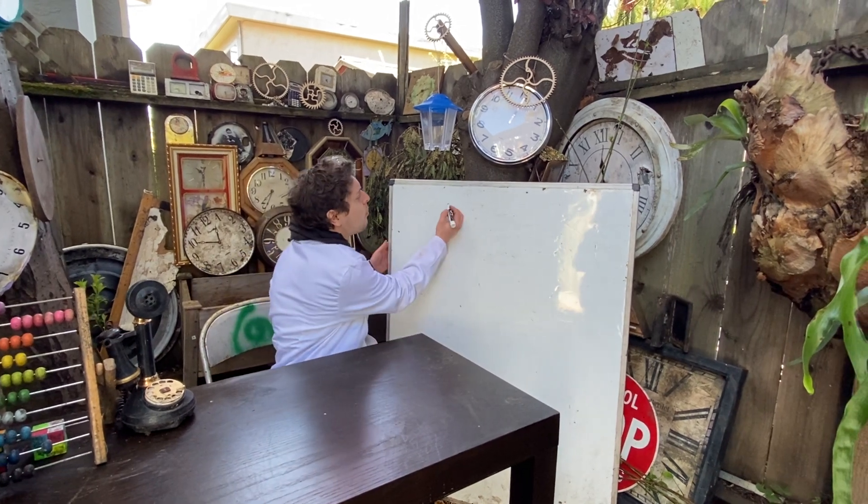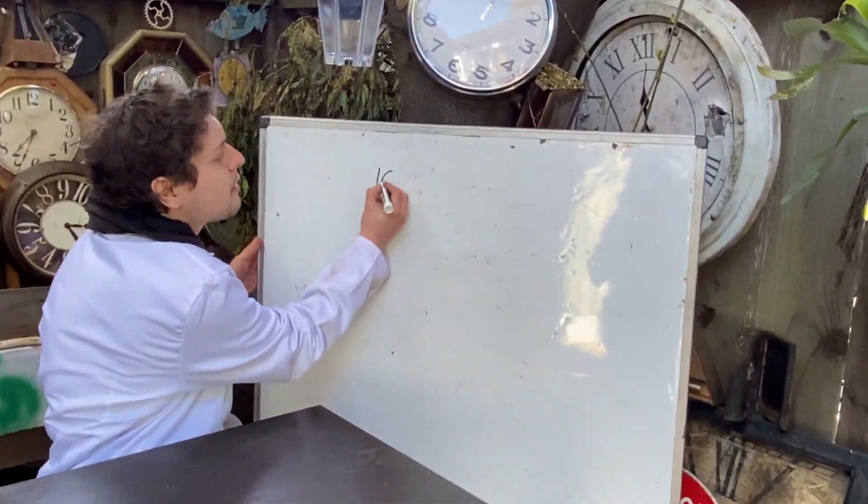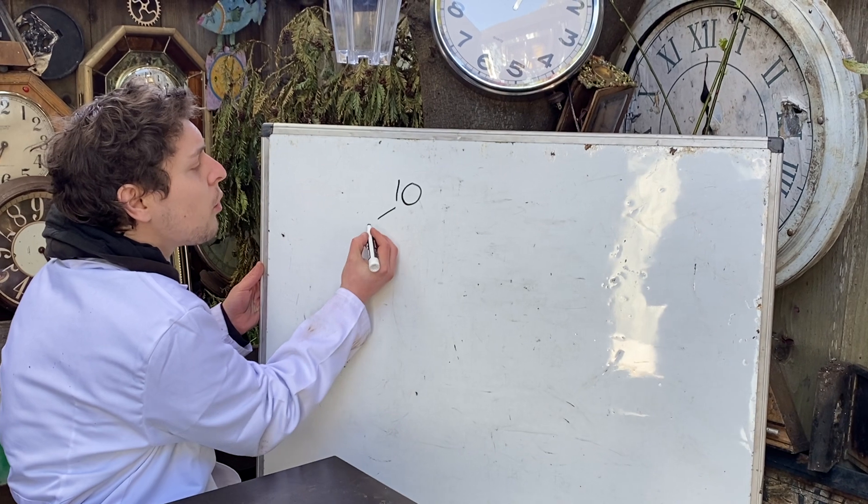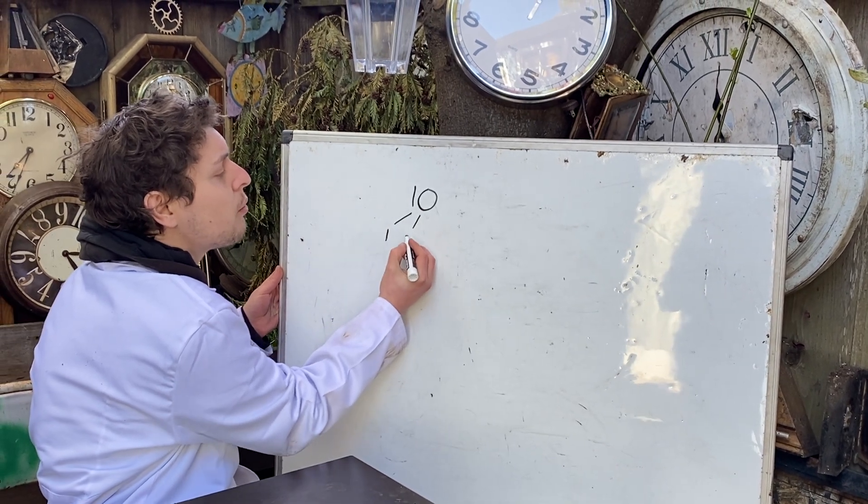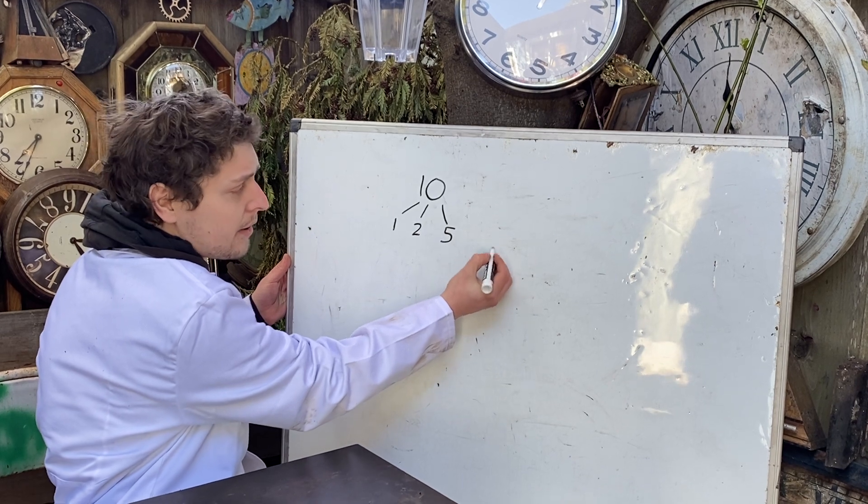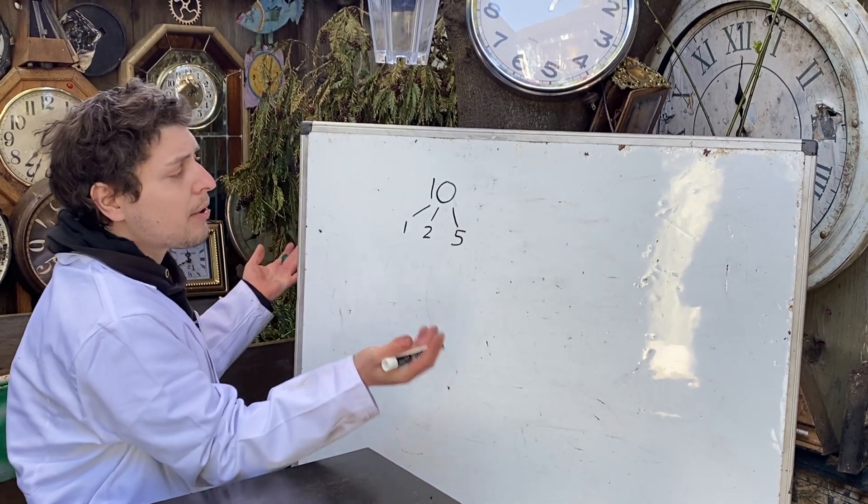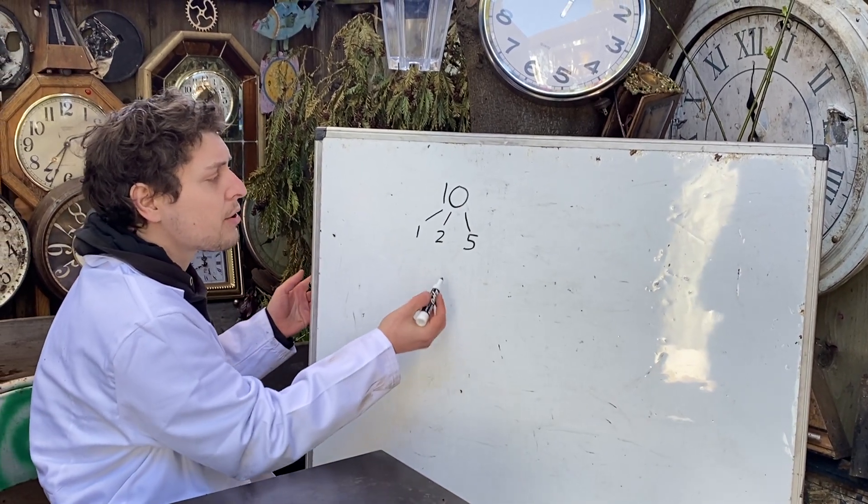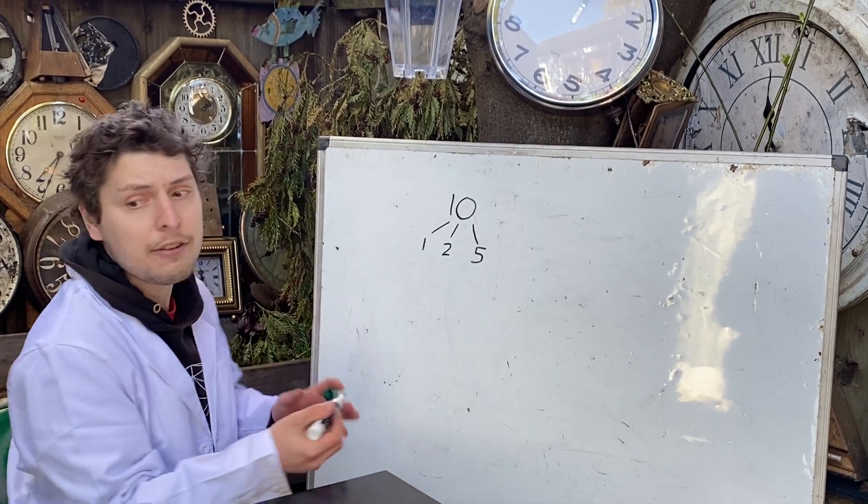So if I were to say what are the proper divisors of the number 10, well normally its factors would include 1, 2, 5, and 10, but we don't include the number itself so its proper divisors would be 1, 2, and 5.